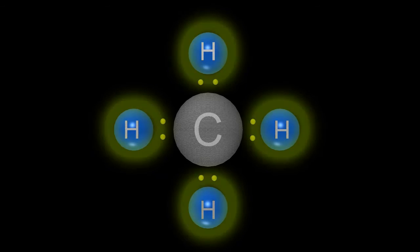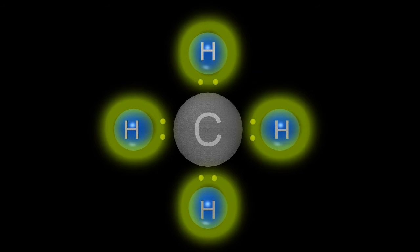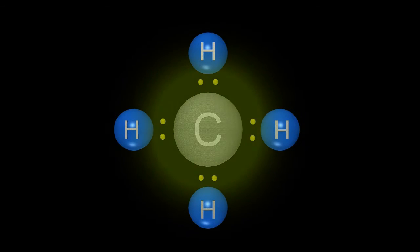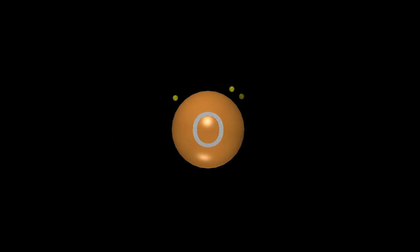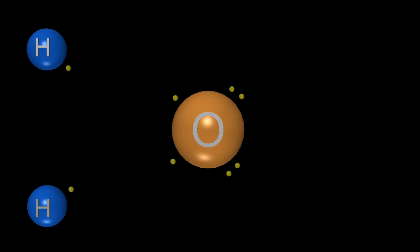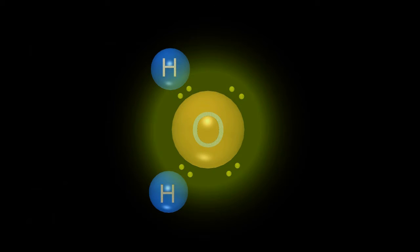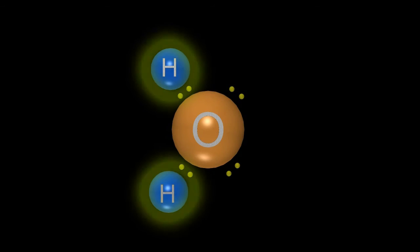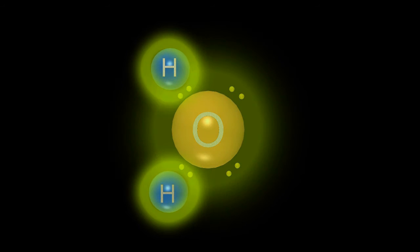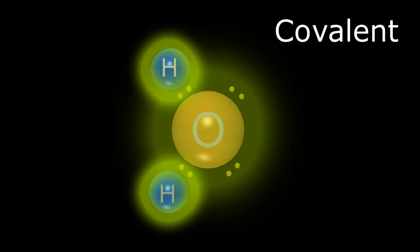The carbon shares one of its four electrons with each hydrogen atom, giving them their requisite two, and in return the hydrogens share their lone electron with the carbon, giving it a total of eight. Similarly, the simple water molecule has a single oxygen atom with six valence electrons bound to two hydrogen atoms. Sharing electrons again gives oxygen its magical eight and each hydrogen their two. Since each atom shares at least one valence electron with its neighbor, this type of bond is called covalent.